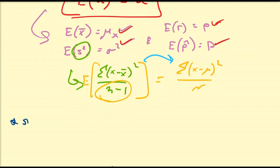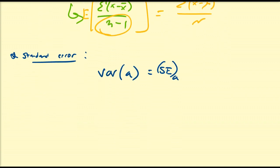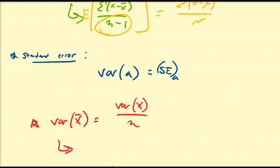Another term associated with these things is the standard error of the estimate. The variance of a particular statistic — treated as a random variable — is usually represented as the standard error of that statistic. For example, the variance of x-bar is equal to the variance of x divided by n, or equivalently, sigma x-bar equals sigma x divided by the square root of n, from the perspective of standard deviations.